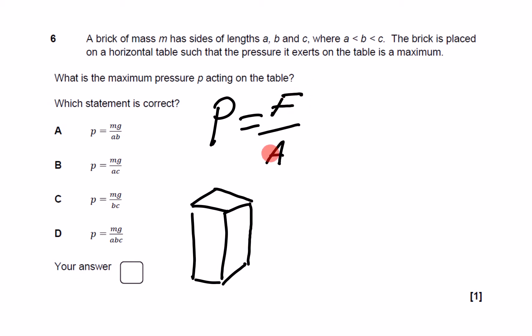The only thing we can change is the area, i.e. which face we can lay it down on. So if we go to our brick here, when we're looking at the area, in order to make the pressure greatest, we need the area to be at its smallest.